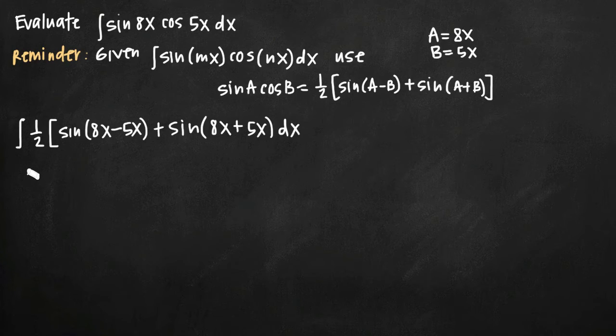We can pull the 1 half out in front, because it's a constant coefficient. So 1 half comes out in front, and what we're left with is sine of 3x plus sine of 13x dx. And at this point it's really easy because we no longer have the product of sine and cosine, which is difficult to evaluate. We just have the sum of two different sine functions.